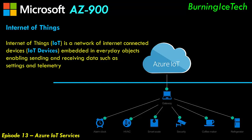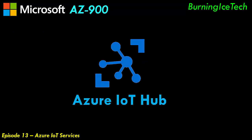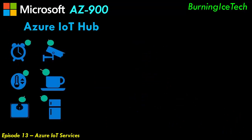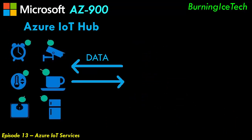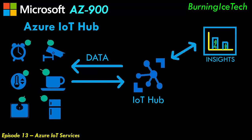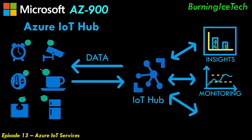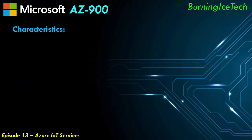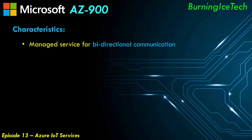One of those services we'll learn about today is IoT Hub. Azure's IoT Hub allows for bi-directional communication between the cloud and IoT devices, and then allows developers to take advantage of this information to provide insights, monitoring, and develop custom solutions for their IoT platform. It's a managed service for bi-directional communication between the cloud and IoT devices, and a platform as a service offering in Azure for IoT development.